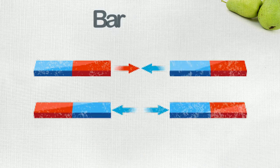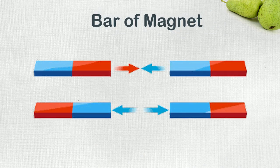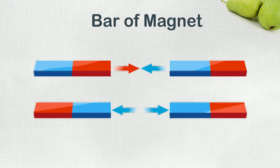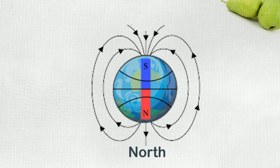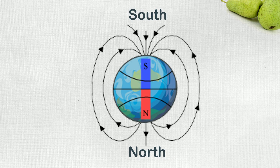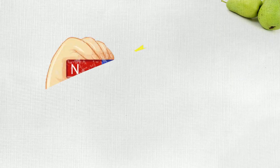Let's take a look at a bar magnet. The end parts of a magnet are known as poles. Usually one is marked as N, meaning north, and the other is marked as S, meaning south.